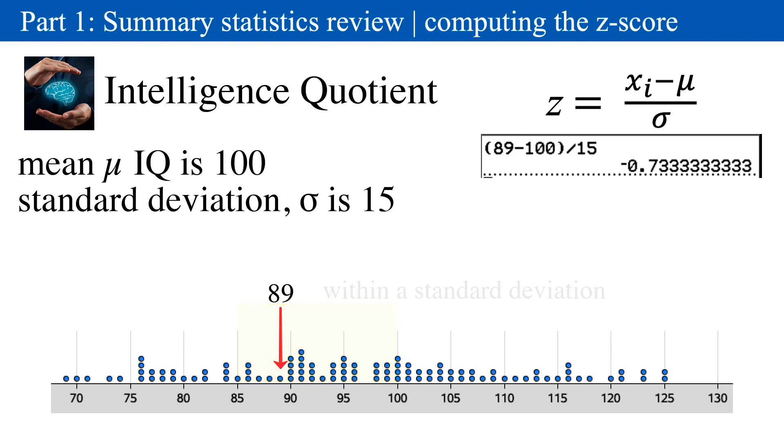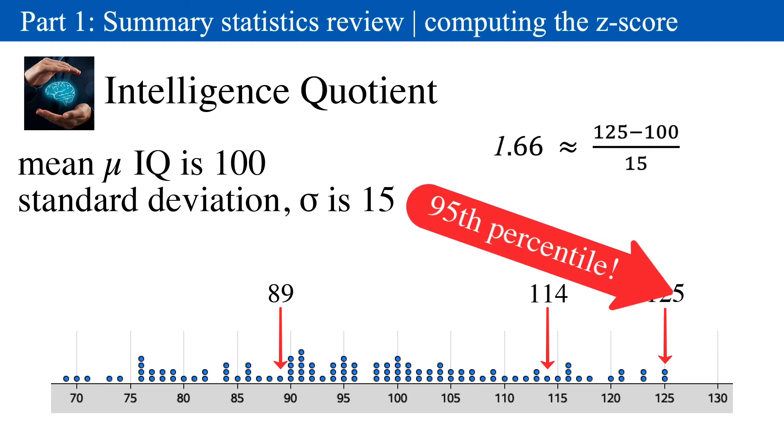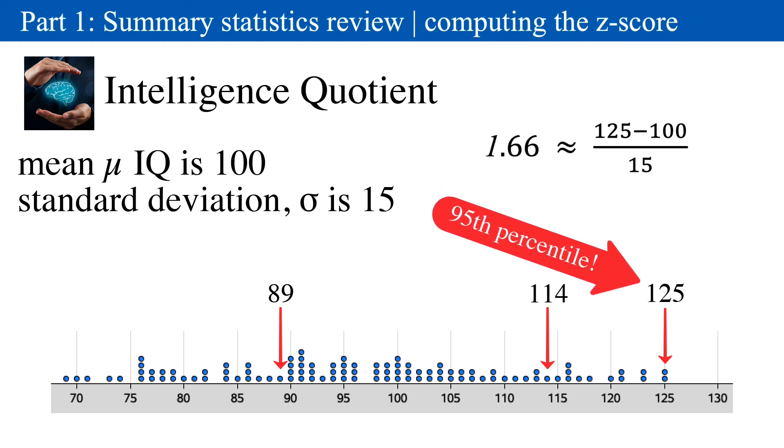Likewise, if you have an IQ of 114, the z-score is 0.93. You're still within one standard deviation and considered normal. However, if your IQ score is 125, the z-score is 1.66. You're at the 95th percentile.